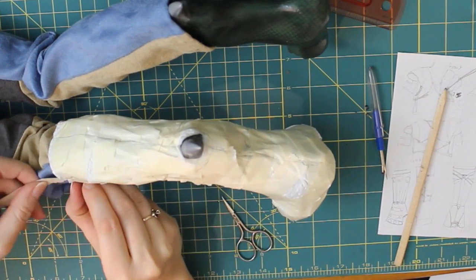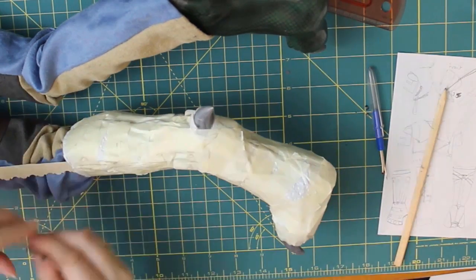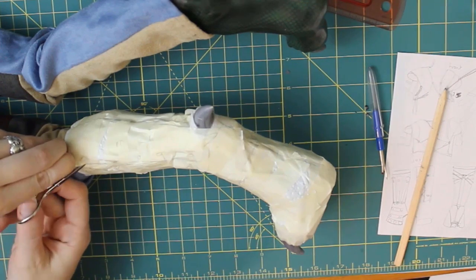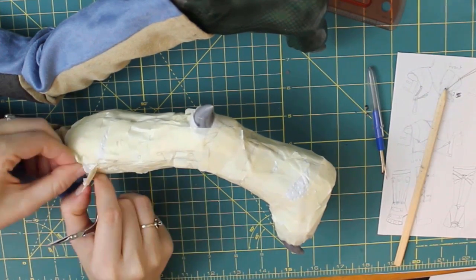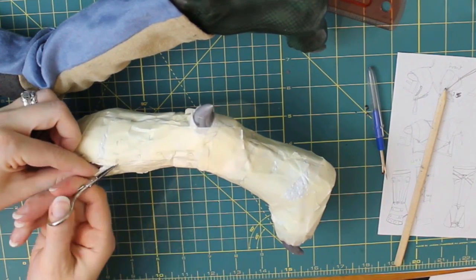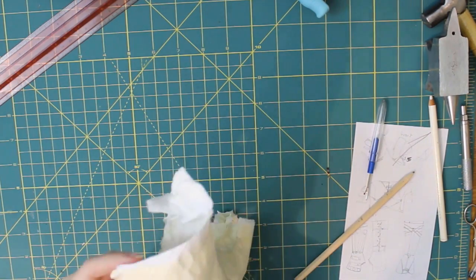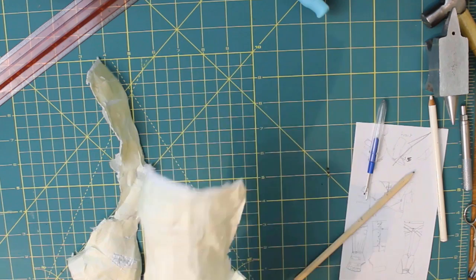Once I figure out where I want all my seams to go, I slide a piece of cardstock between the doll and the paper and tape. This lets me cut the pattern free without worrying about scratching or damaging my doll or his clothing. I like to use embroidery scissors to cut the pattern off because they give me more control over where the blades are going.